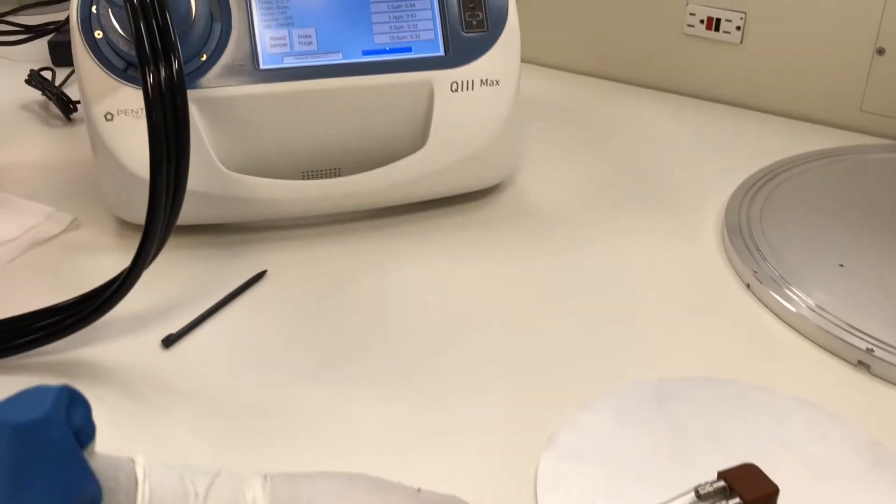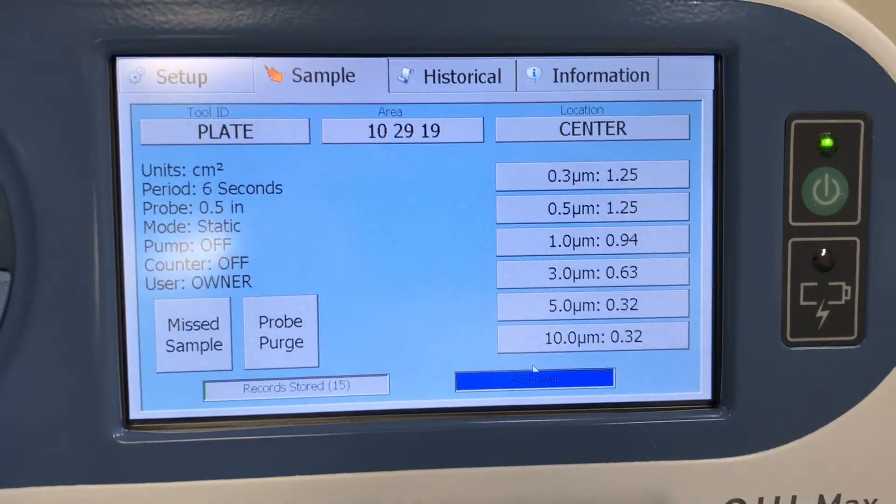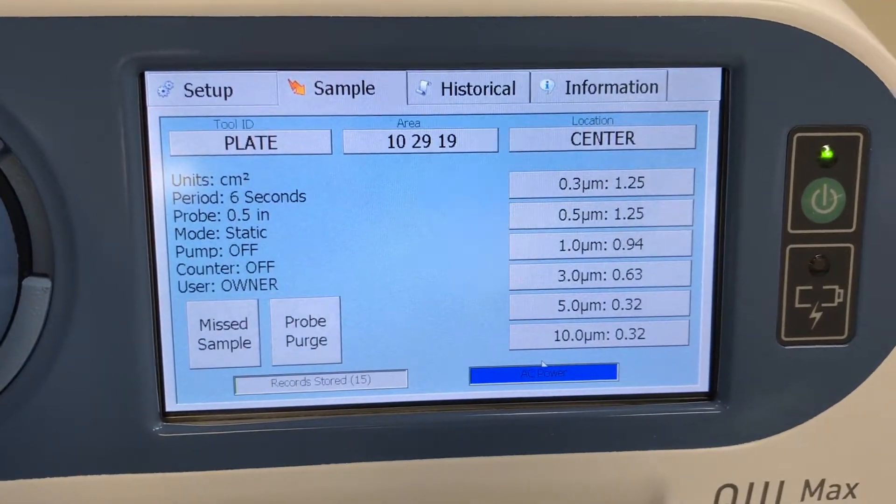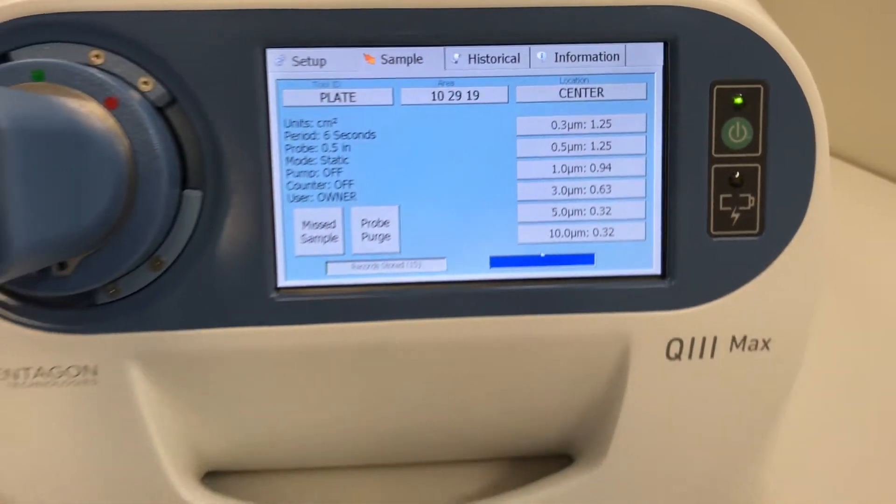After the second wipe, the results show 1.25 particles greater than 0.3 micron per centimeter squared were detected in six seconds.